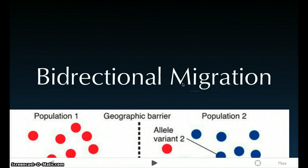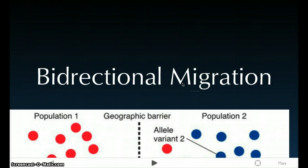Migration is basically when a small population moves or migrates to a new location, and this tends to alter allele frequencies and genetic composition. Self-migration is the movement of individuals, like a small population, from place to place. Bi-directional migration is when there is the introduction of new mutated alleles into neighboring populations, and it goes both ways.